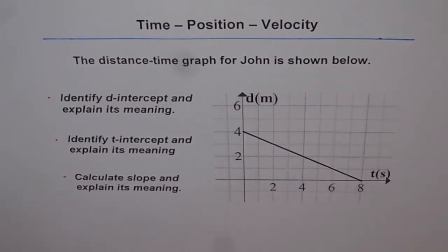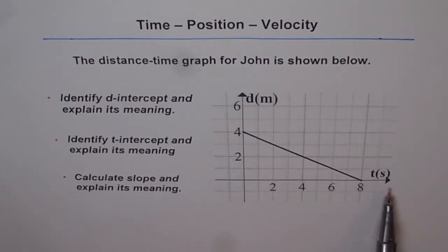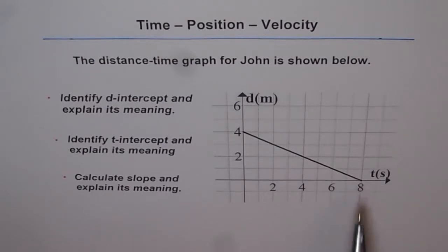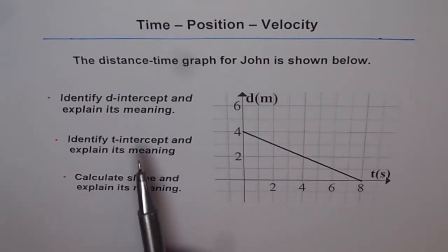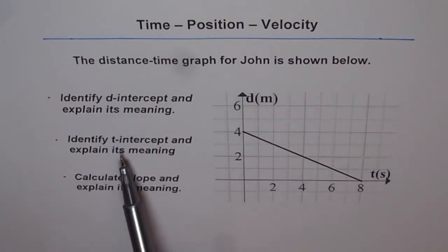This is a basic question on distance-time graph, but it introduces a couple of new things. Normally we talk about x-intercept and y-intercept because the horizontal line is referred to as the x-axis and the vertical line as the y-axis. So the graph crossing the x-axis is the x-intercept, and crossing the y-axis is the y-intercept. That gives you an idea of what d-intercept and t-intercept should be.